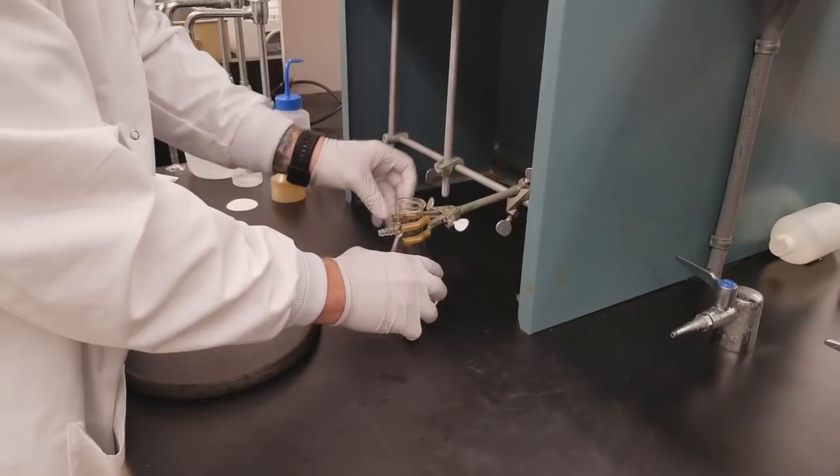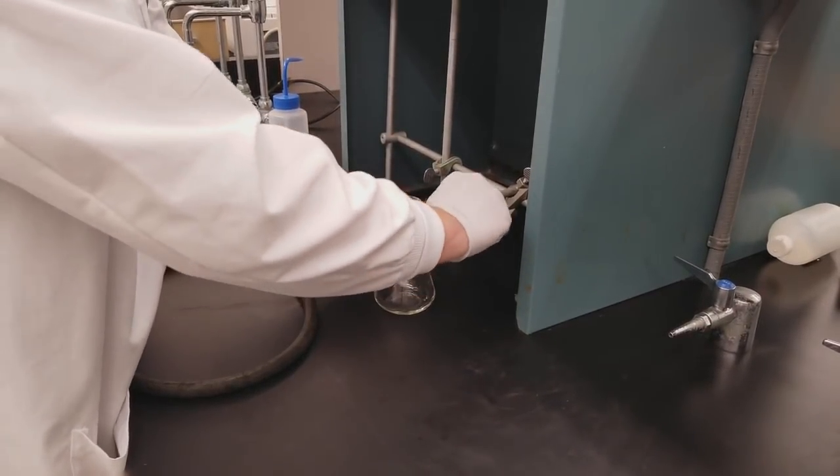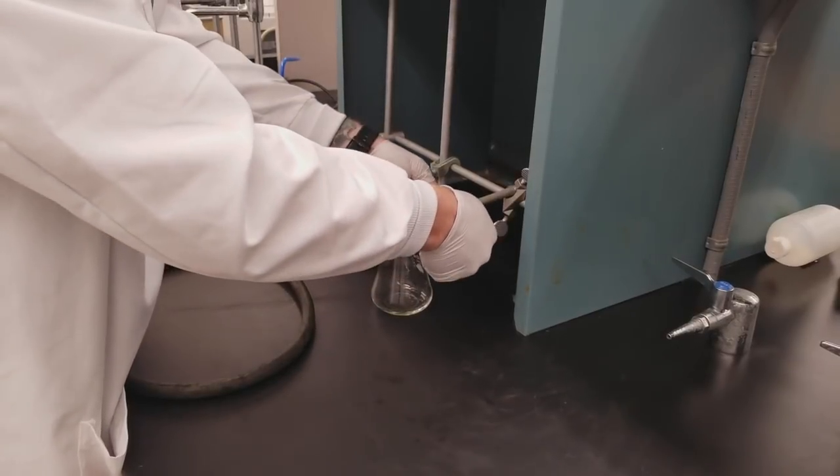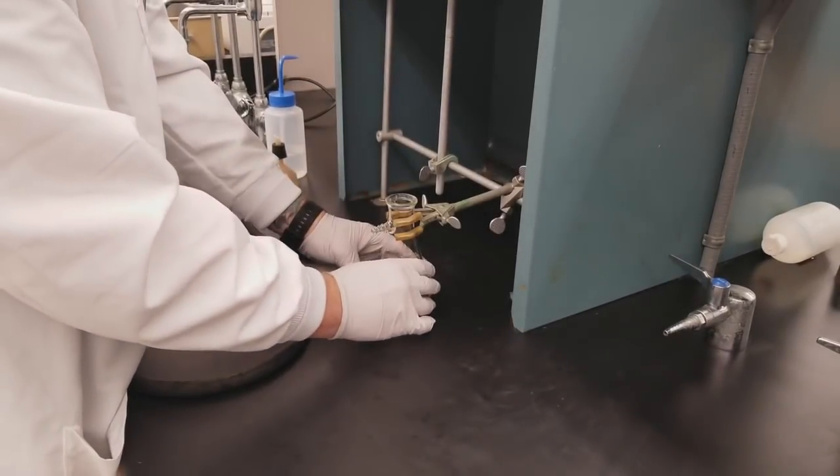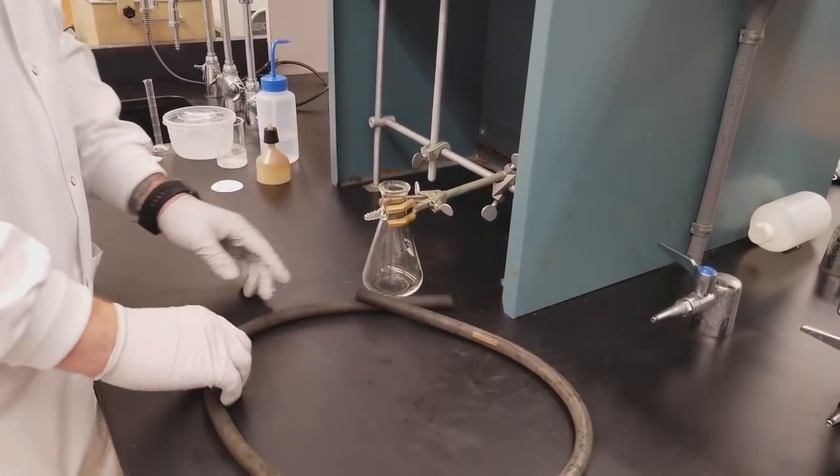Now we're going to put our vacuum filtration flask into the clamp, tighten that up, and now we can go ahead and attach our vacuum tubing.